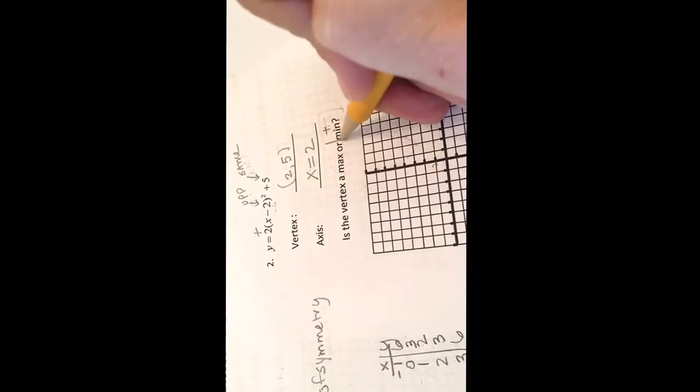My axis of symmetry is x equals 2. Now, is this number here positive or negative? It's positive. So positive goes with minimum.